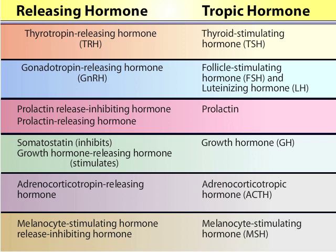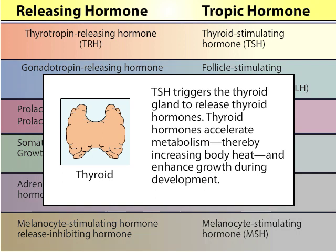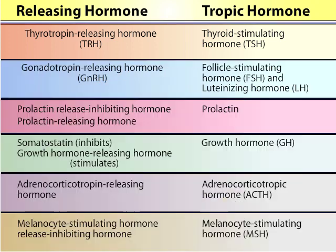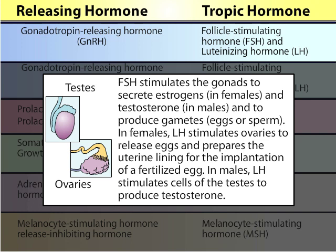The anterior pituitary hormones are called tropic hormones. Thyroid-stimulating hormone triggers the thyroid gland to release thyroid hormones, which accelerate metabolism, thereby increasing body heat, and enhance growth during development. Follicle-stimulating hormone stimulates the gonads to secrete estrogens in females and testosterone in males, and to produce gametes — eggs or sperm.